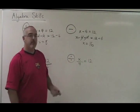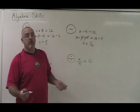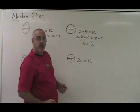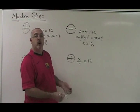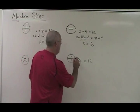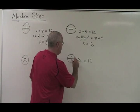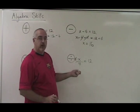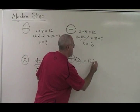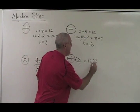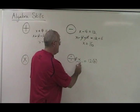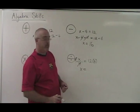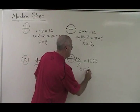Division. X divided by 4 equals 12. What is X? If I am dividing my X by 4, I want to do the opposite — I want to multiply it by 4. So we multiply both sides by 4. If we're multiplying the left side by 4, we have to multiply the right side by 4. These cancel, X is now isolated and is equal to 12 times 4, which is 48.